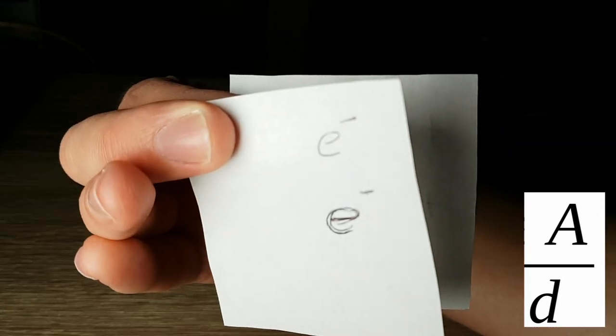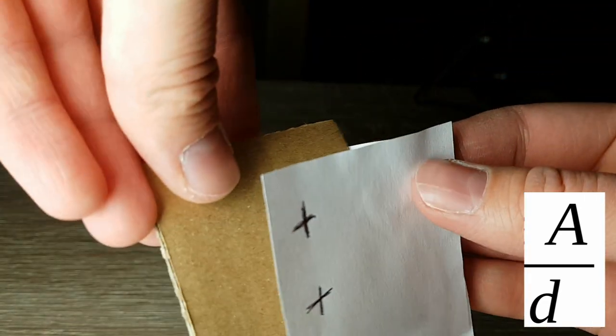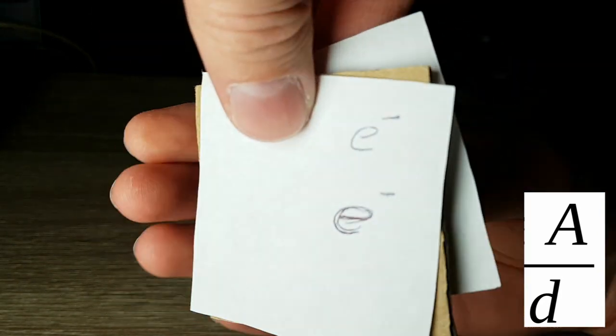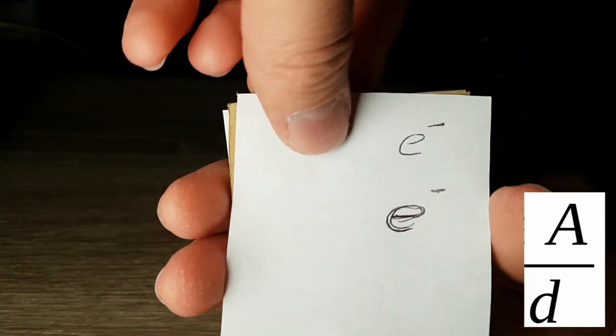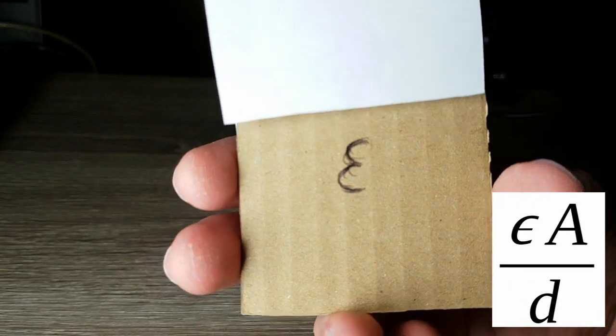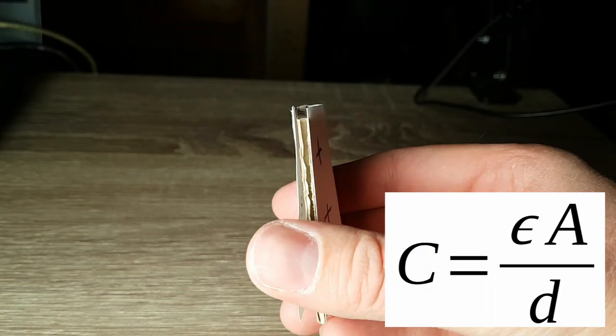Normally there is a layer of non-conducting material between the two plates to ensure that they do not come into contact. This material is called a dielectric and it also affects the electric field that exists between the two plates, as determined by the dielectric's permittivity epsilon. Using these constants, we can calculate the capacitance of a capacitor as C equals epsilon A over D.